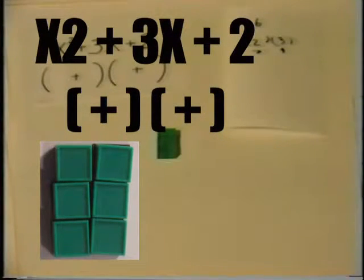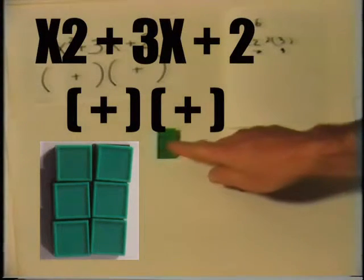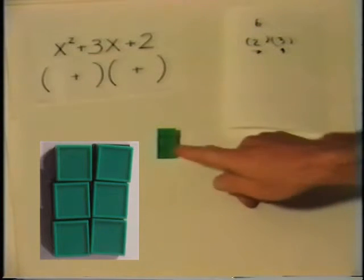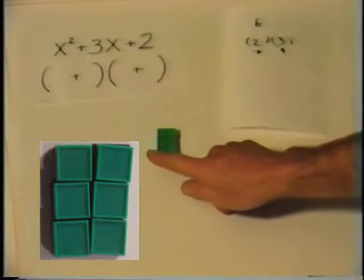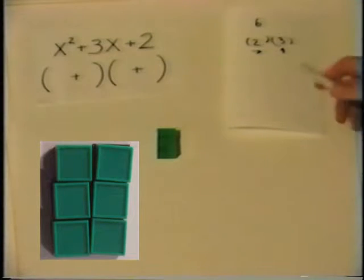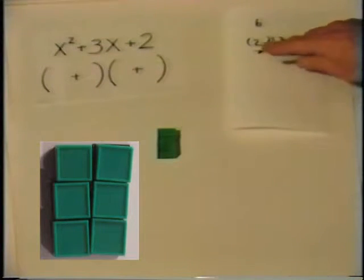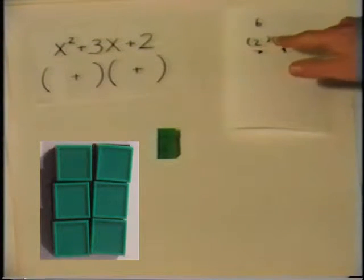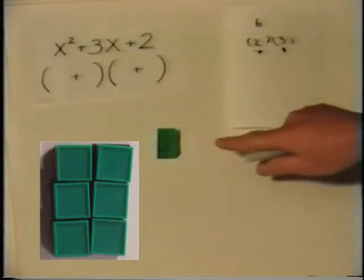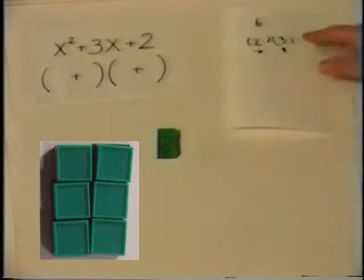Again, what is factoring? Factoring is building a rectangle. Here we build a rectangle using 6. Our distance over is 2 — we recorded our distance over as 2. Our distance up is 3.